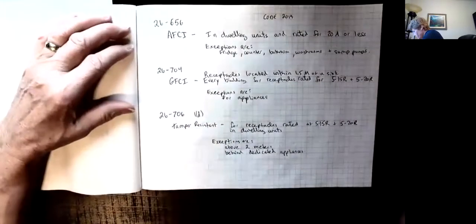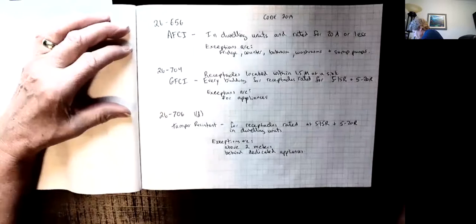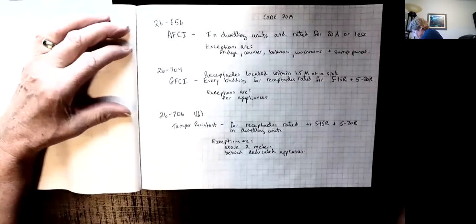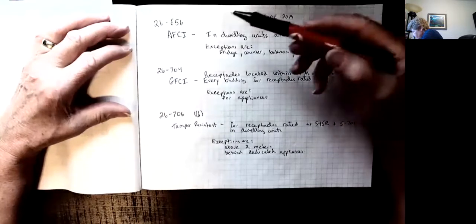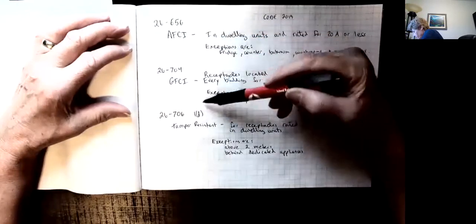Let's review the rules that affect the placement and the type of electrical receptacles that are used in a dwelling unit. These are three very important rules.